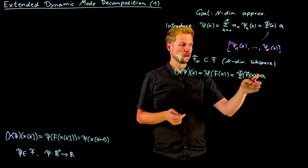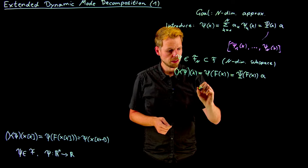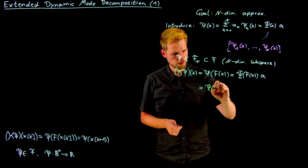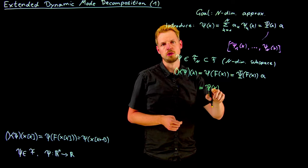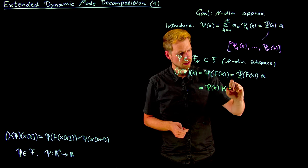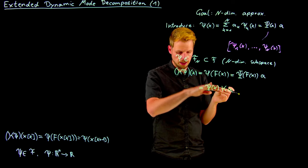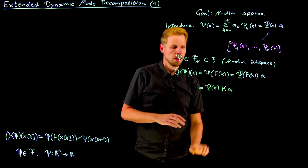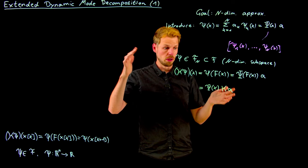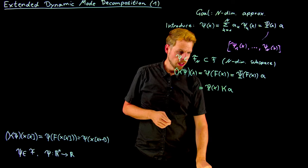Now the action of the Koopman operator propagates forward in time this function. But because it's a set of basis functions, the only thing we can do is modify the basis coefficients. So what we get is the same basis coefficients at the previous time step and then a K matrix now because it acts on a vector of coefficients that maps this forward in time. What we have seen now is this is a discrete, in space, discretized version of the Koopman operator, an n by n matrix.